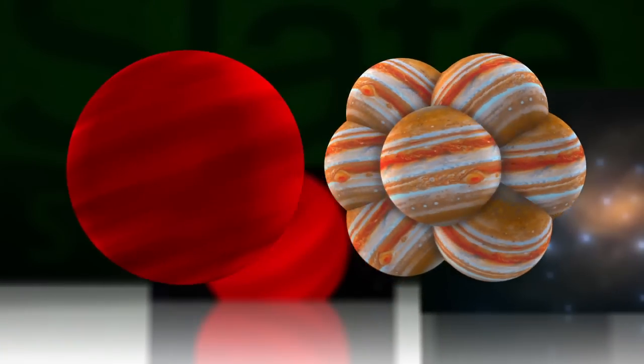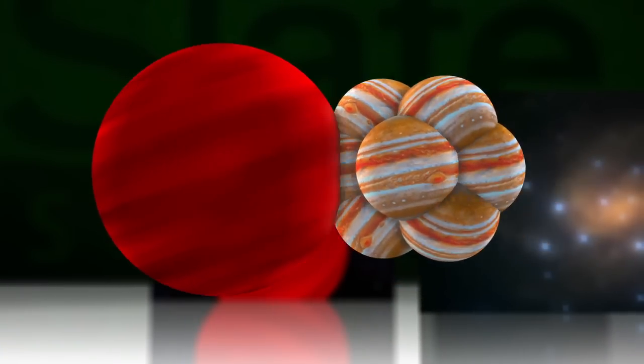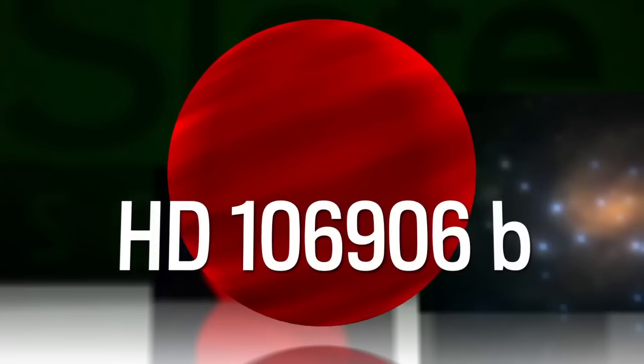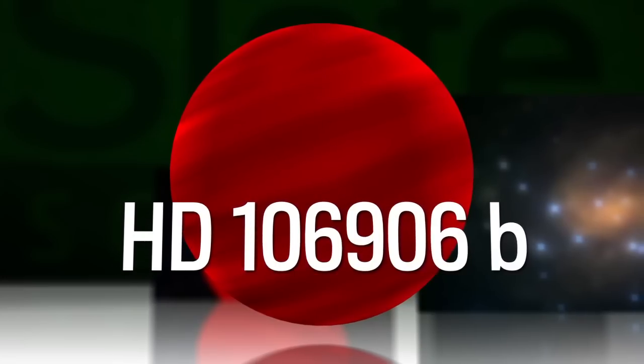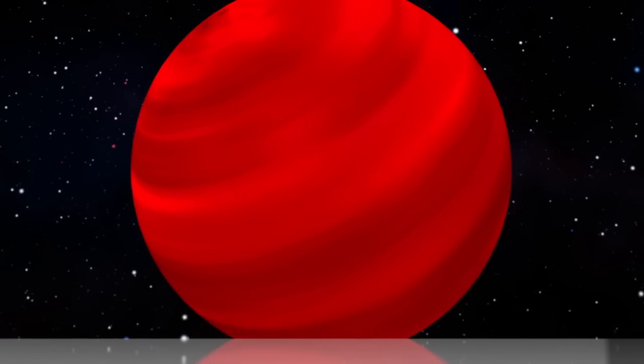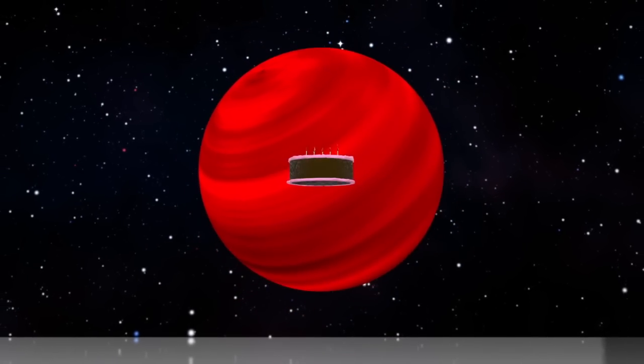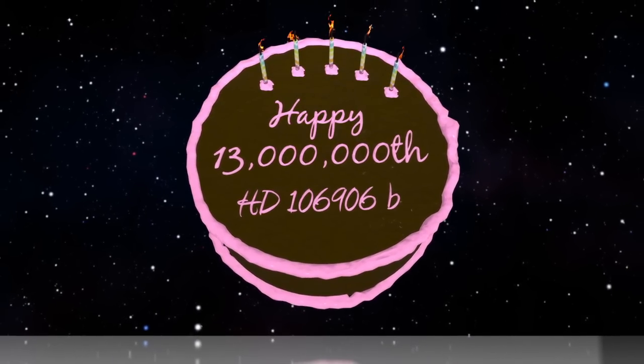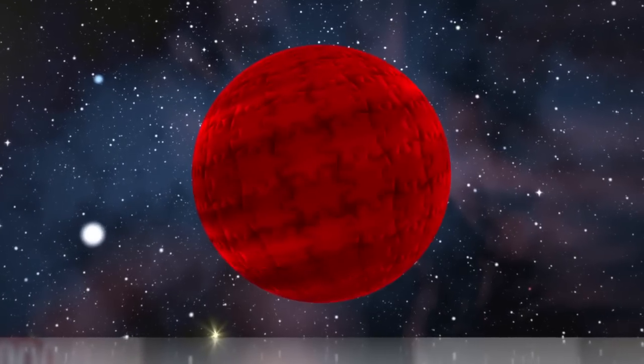Eleven times Jupiter's mass, the planet called HD 106906b orbits at 60 billion miles from its sun-like star. The mysterious world is quite young, just 13 million years old, making it a puzzle.